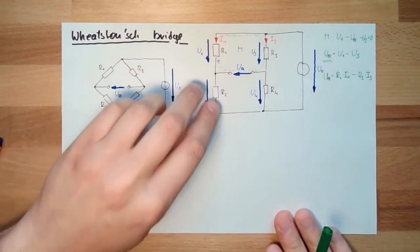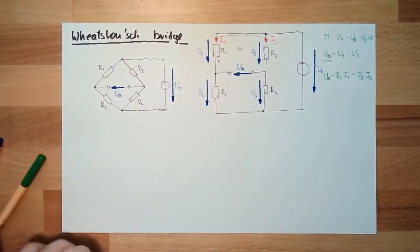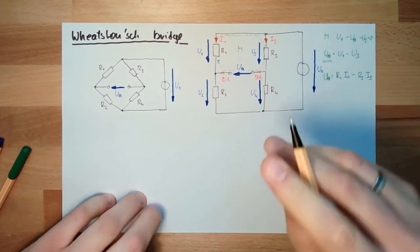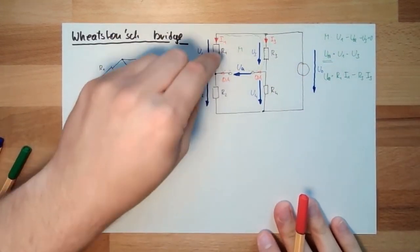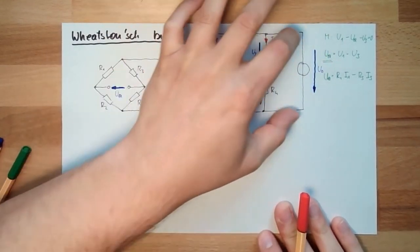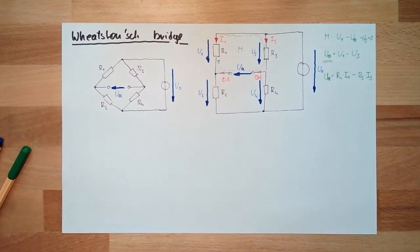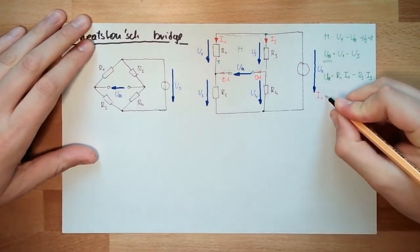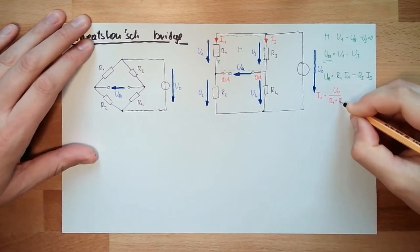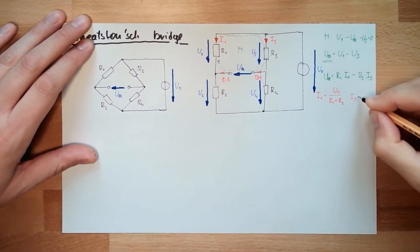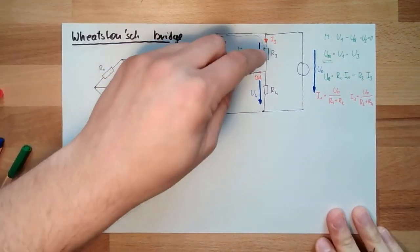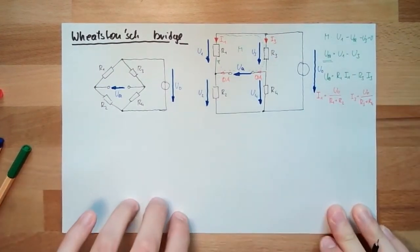Now, how to calculate I1 and I3. We assume here we have zero ampere — no current running away. This means these two resistors are in series, and the sum of the voltages is always U0. So I can simply calculate: I1 equals U0 divided by R1 plus R2, and I3 equals U0 divided by R3 plus R4.